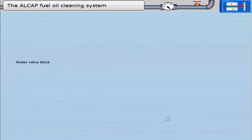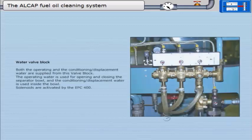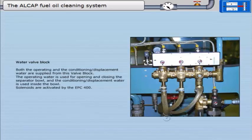Water valve block. Both the operating and the conditioning or displacement water are supplied from this valve block. The operating water is used for opening and closing the separator bowl and the conditioning or displacement water is used inside the bowl.